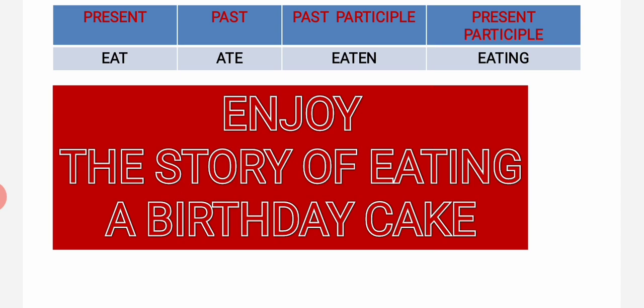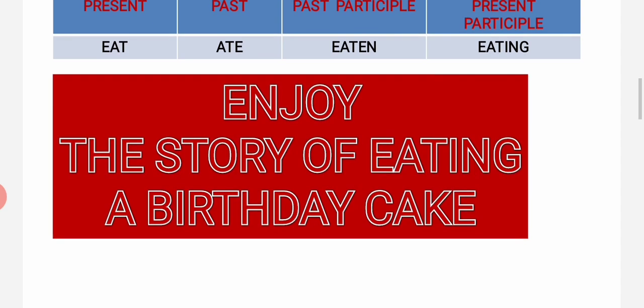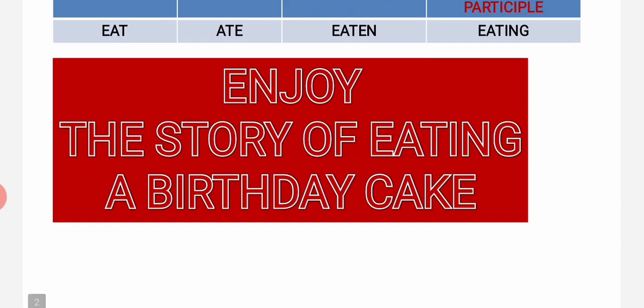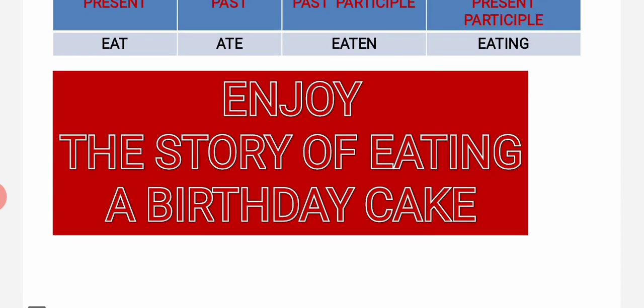Present participle - I am eating cake. I have been eating cake. In this way we will go. So 'eating' we use in many senses. In continuous form we use 'eating'. In perfect, we use 'eaten', and that is the third form of verb. In perfect, we always use the third form of verb.